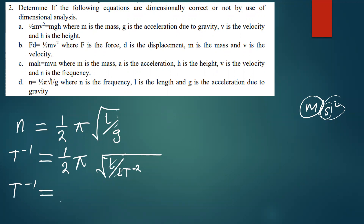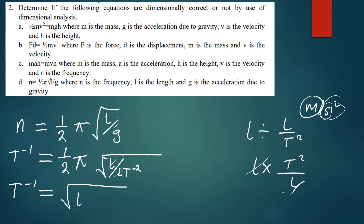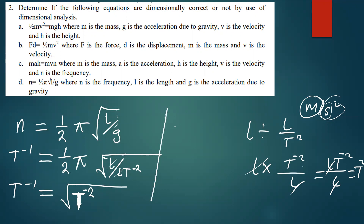After cancellation we remain with T². So we have the square root of T⁻², since we need to put the negative. The square root of T⁻² gives T⁻¹. Therefore the right side equals T⁻¹, which matches the left side T⁻¹. This equation is correct — it's actually the formula for the frequency of a simple pendulum.